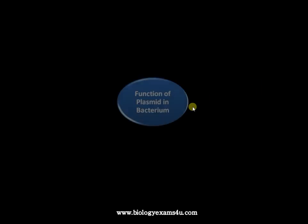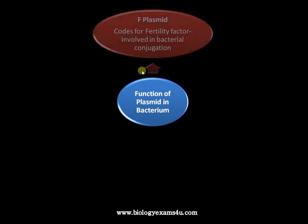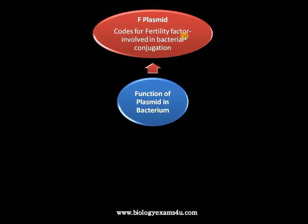Now moving on to the functions of plasmids in bacteria. First is the F plasmid, also called the fertility plasmid, which codes for a fertility factor involved in bacterial conjugation. The bacterium carrying this factor is called F-plus and acts as the donor bacterium in conjugation. This plasmid is transferred during conjugation.